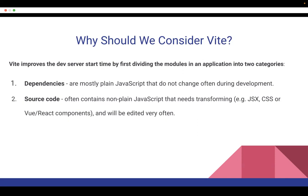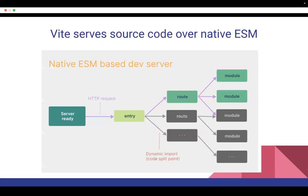The second category is source code. Source code is what you frequently modify, and it often isn't plain JavaScript — it can be JSX or React components. Vite serves source code to the browser as a native ECMAScript module. The browser plays the role of the bundler, and on demand of a browser request, Vite serves the source code over native ECMAScript modules.